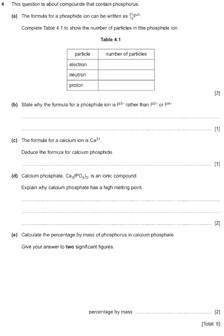If it is a non-metal, it is going to become an anion. If it is a metal, it is going to become a cation. So the formula for phosphide ion can be written as the symbol P with a proton number of 15, the mass number or nucleon number which is 31. This negative three on top is symbolizing that this element has gained three electrons.